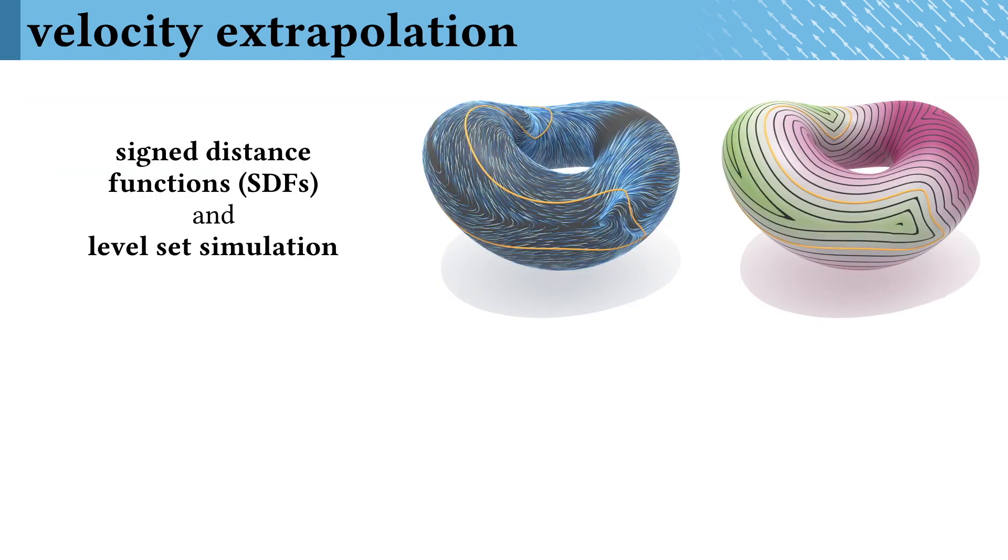A common operation when working with signed-distance functions in level set simulations is to compute some update velocity at a level set and then extend that update across the entire domain. The vector heat method turns out to be perfectly suited for this operation.